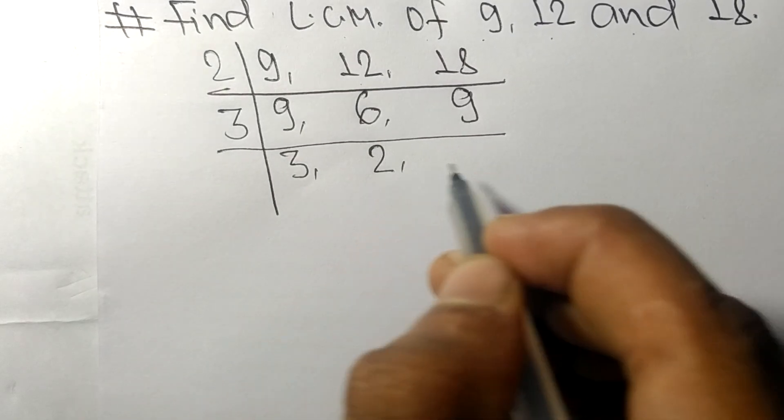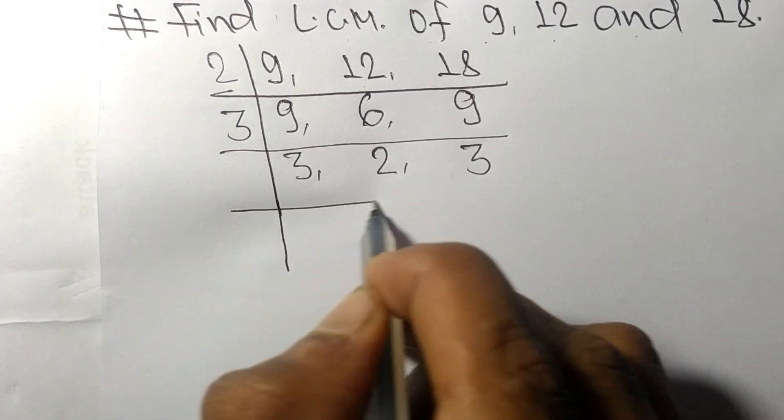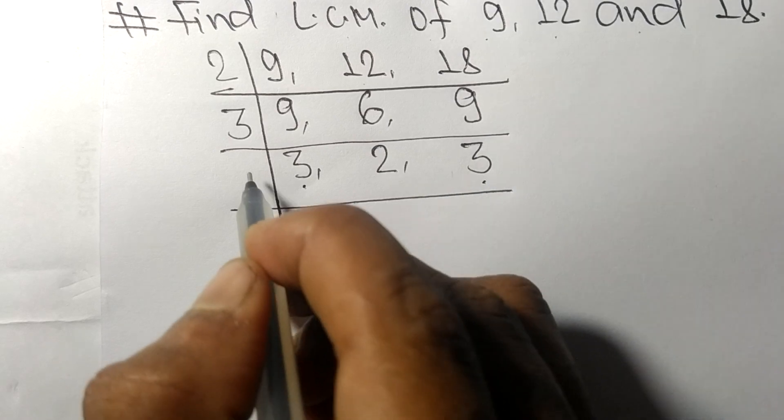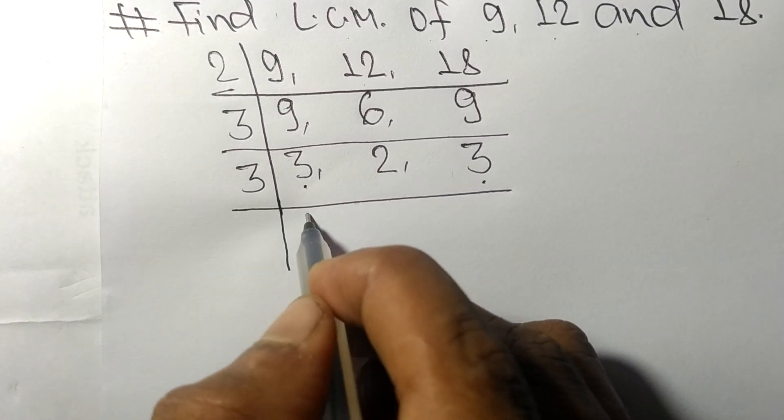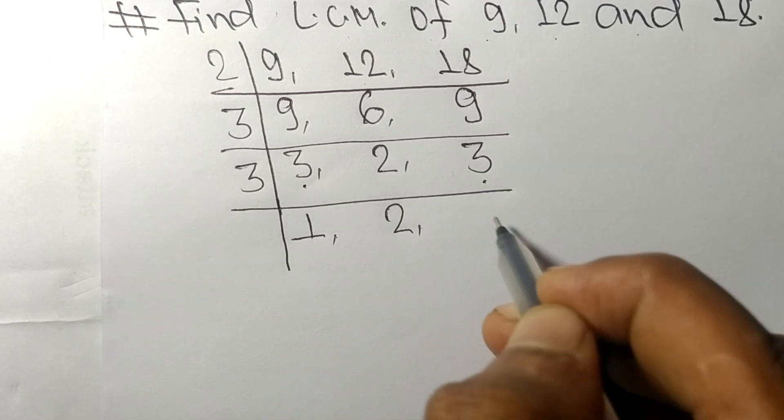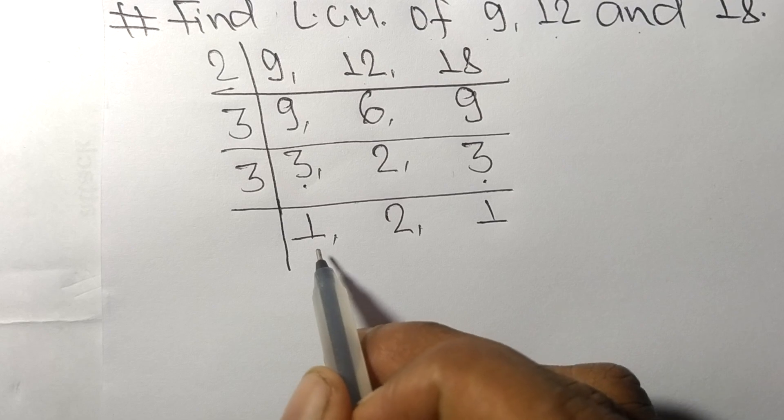So now these both 3 are exactly divisible by 3. 3 times 1 mean 3, 2 not divisible so it is same, 3 times 1 mean 3. So now we got 1, 2 and 1.